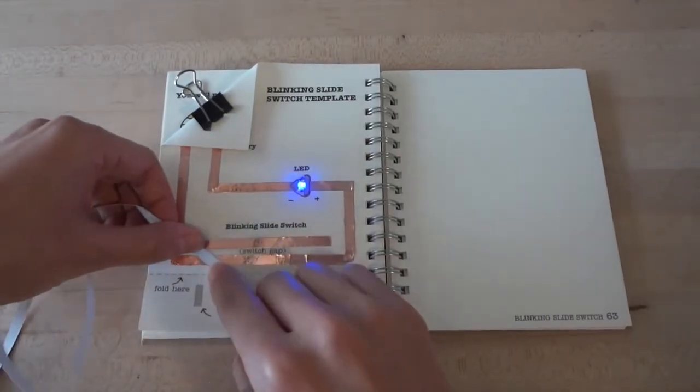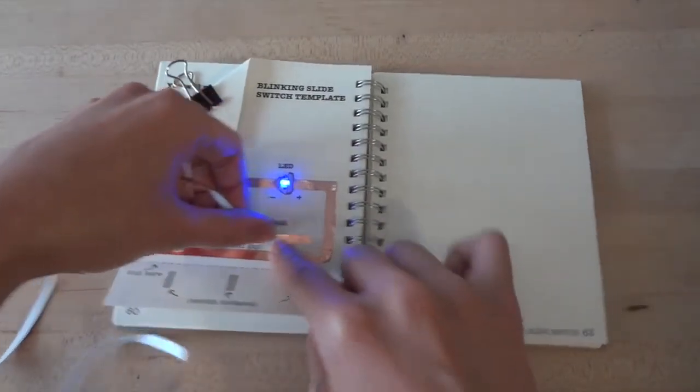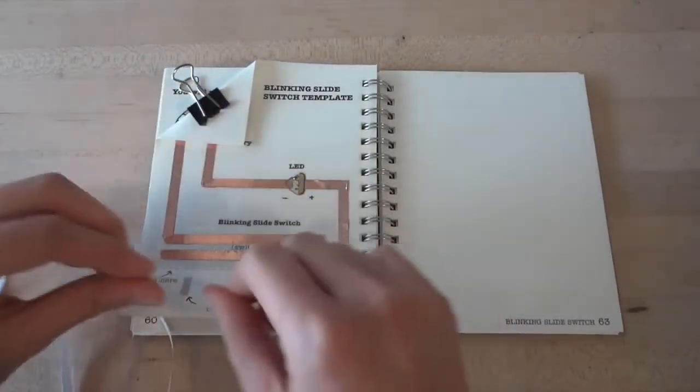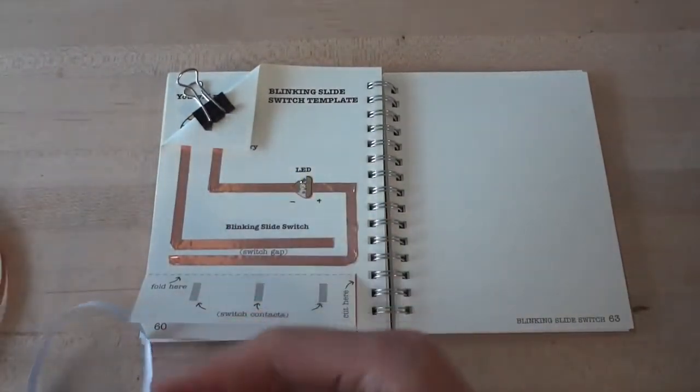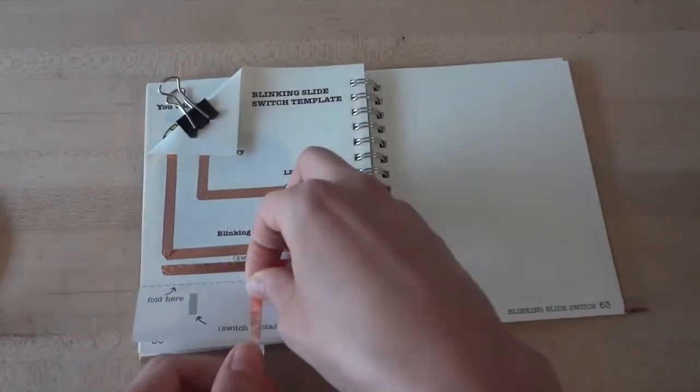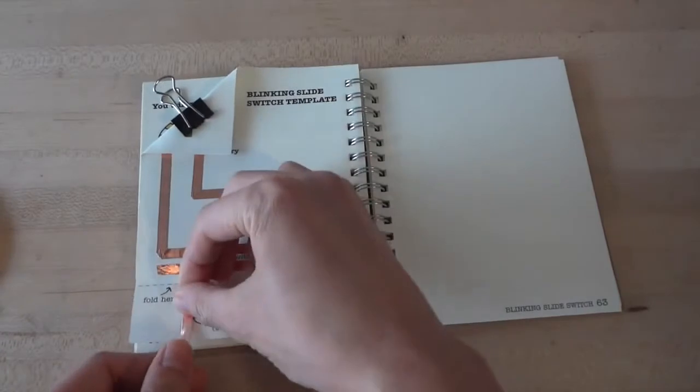Now you can use your conductive foil to bridge anywhere along the gap to turn on your LED light. We can use this to create a blinking pattern by putting down copper tapes at specific points along the gap. Now, tape three small pieces of copper foil on the bottom of your template. These will create the contacts for your blinking switch.